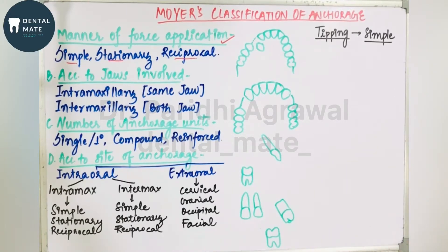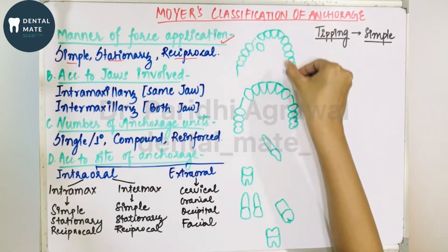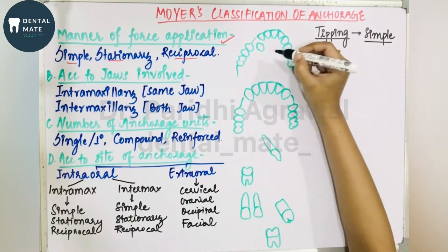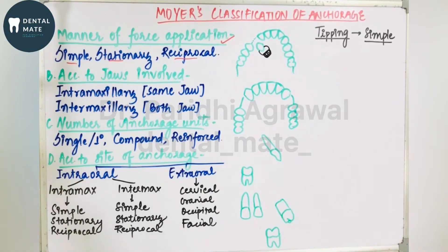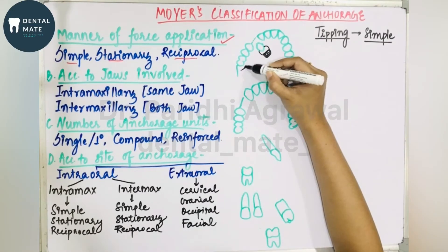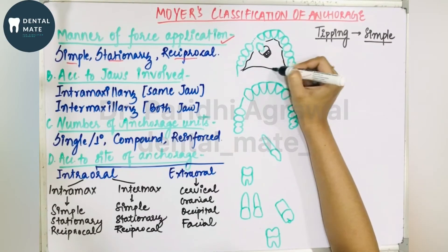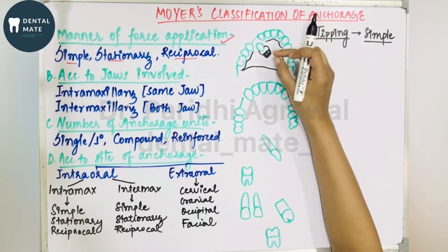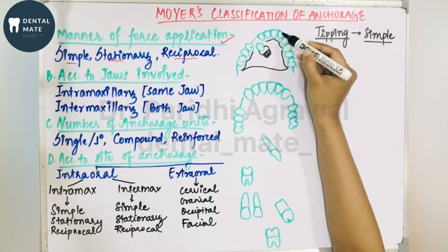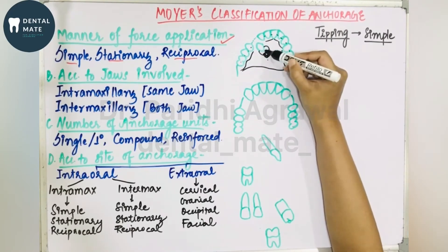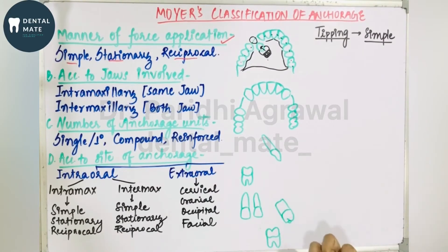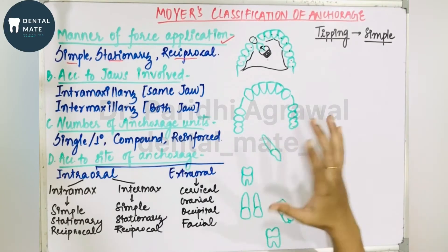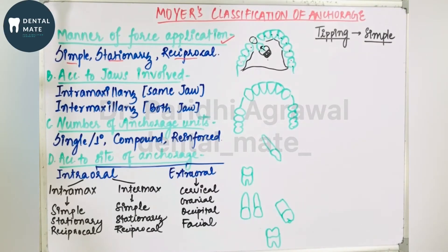An example of simple anchorage: suppose one tooth is lingually placed in the arch while the other teeth are aligned. We put a screw appliance on this tooth. When we open the screw, it considers all the aligned teeth as anchorage and pushes the lingually placed tooth into alignment. There would be resistance to the tipping movement of the various teeth. This is an example of simple anchorage.